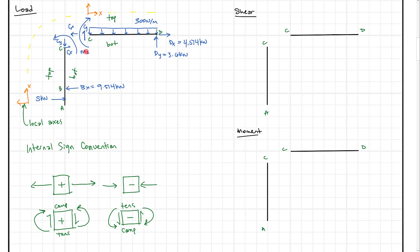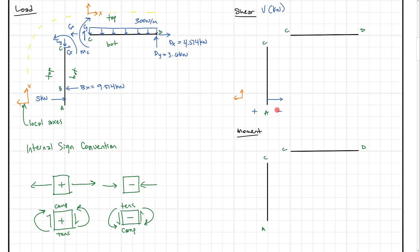Let's get started on the moment diagrams. Starting at A, there's no load, so we continue until we hit the one-meter mark and the 5 kilonewton point load. That 5 kilonewton force pushes us down to minus 5 kilonewtons on the shear diagram — positive is on one side and negative on the other based on our local axes. Then at the 9.514 kN reaction at BX, we come straight up and that brings us back to 4.514 kilonewtons.